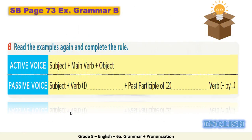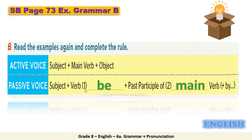Now let's move to part B. Read the examples again and complete the rule. Active voice: subject + main verb + object. Passive voice: subject + verb 'be' + past participle of the main verb.